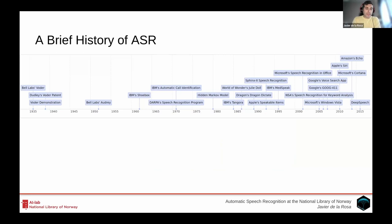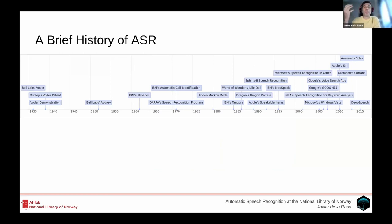In the brief history of ASR, which we can maybe date back to the Bell Labs experiments with recognizing digits, the field has been really focused on telephone conversations, number identification, and intent recognition. That is when you're talking on the telephone and an assistant tells you: if you're going to do a local transfer, press one; if you want to speak to an agent, press two. Then there was an evolution where you could actually say the number or say yes or no — very short words.